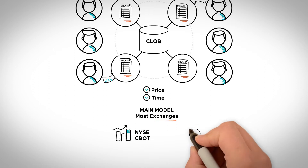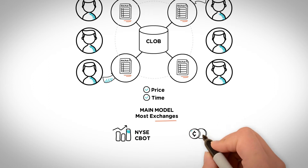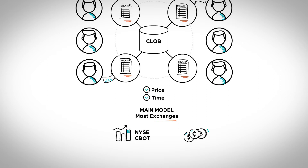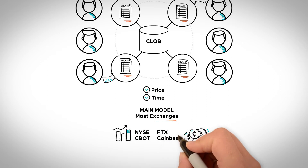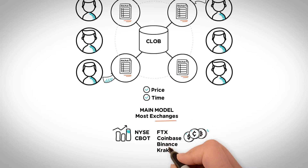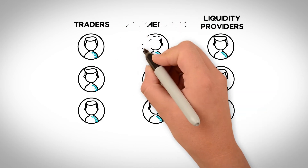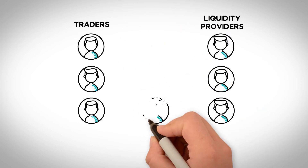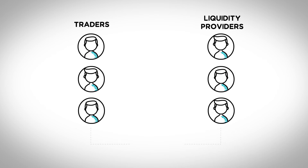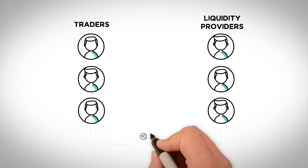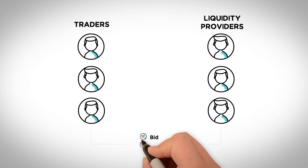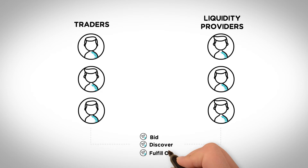Today, this model is followed by a number of crypto exchanges including FTX, Coinbase, Binance, and Kraken. Among other things, CLOBs essentially eliminate intermediaries during trade activities and create a level ground where liquidity providers and traders can come together to bid, discover, and fulfill their orders.